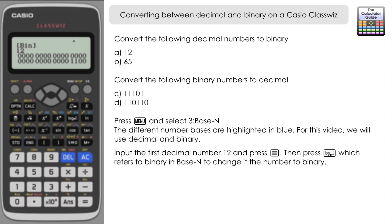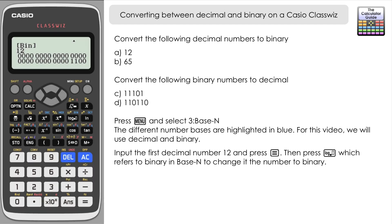But in Base-N mode, this refers to binary. If we press this, our number will be converted to binary. It displays all the bits that the ClassWiz is capable of, but we really want to zoom in on the last digits: 1100.